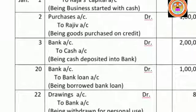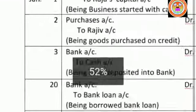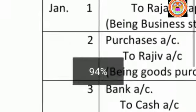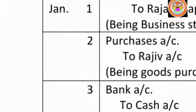Under the date column, as usual we will fill the year first, but here the year is not available, so put a dash for that. Then write Jan 1 as the date.